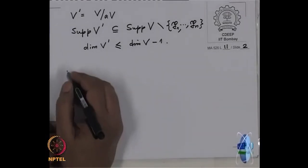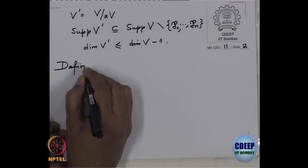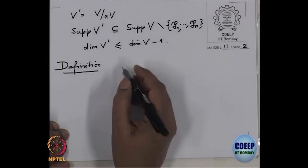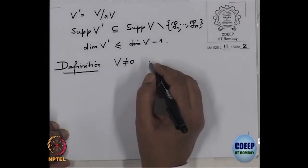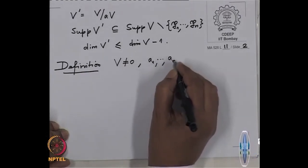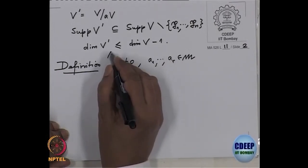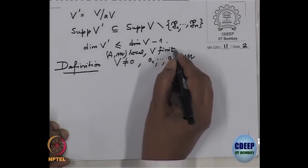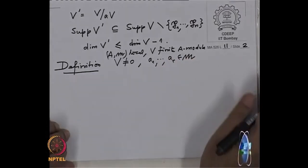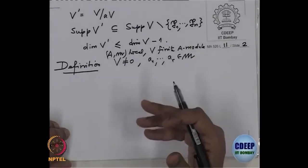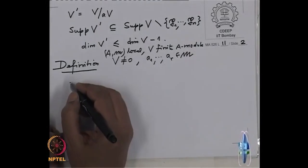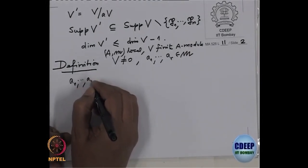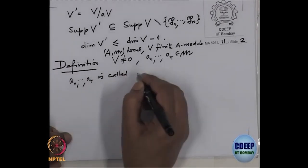This is probably the appropriate time to make a definition. Suppose we have a nonzero module V and a1 to ar are elements in the maximal ideal of A. Remember our assumption is always that A is local and V is a finite A-module, because in all the proofs we use associated primes, support, etc., which behave well when the module is finitely generated over a Noetherian ring. This sequence a1 to ar is called a regular sequence.